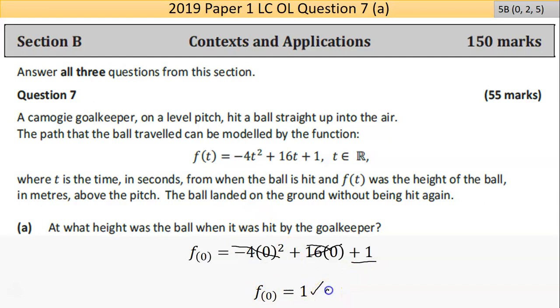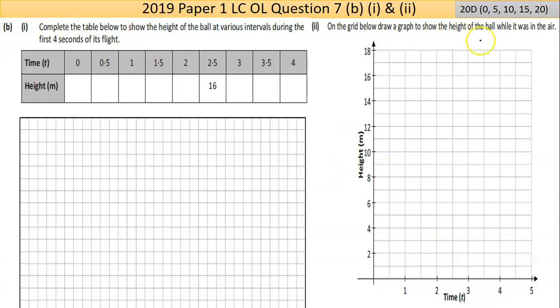You're just left with the one, so the height when the ball was kicked was one. I should put in the units, one metre. I'm not sure if I would have lost a mark by not having the units in there.